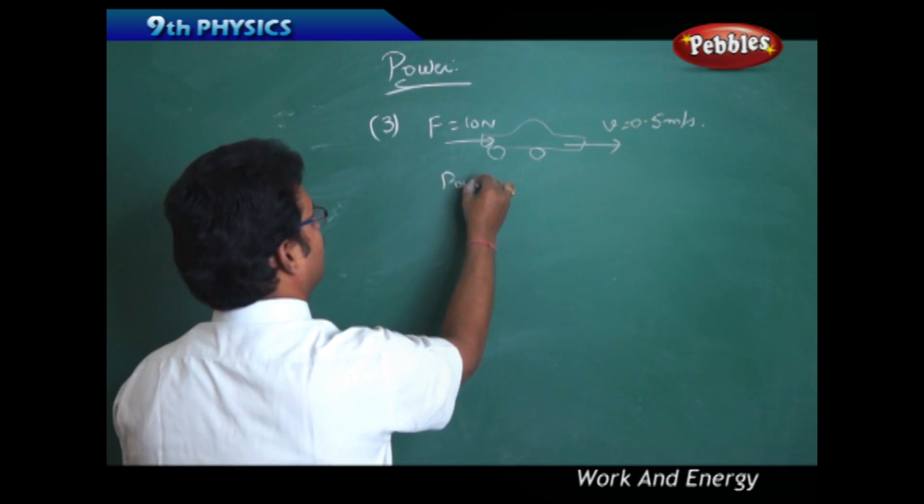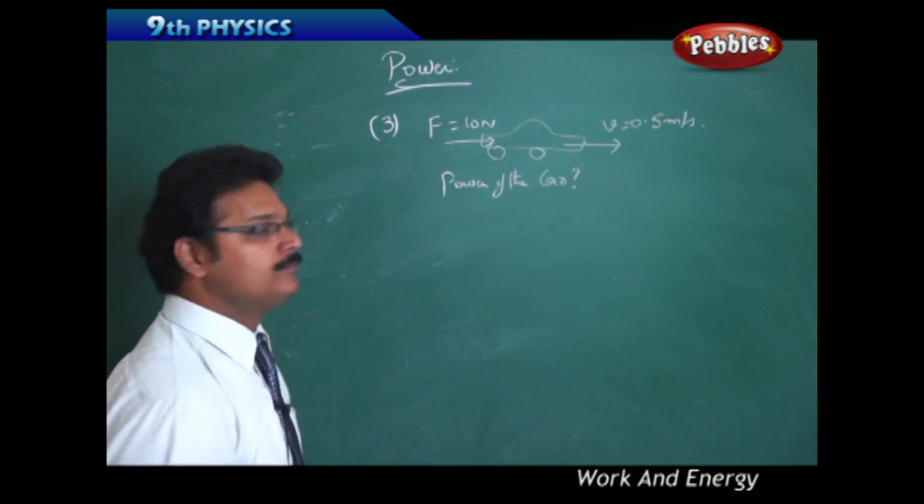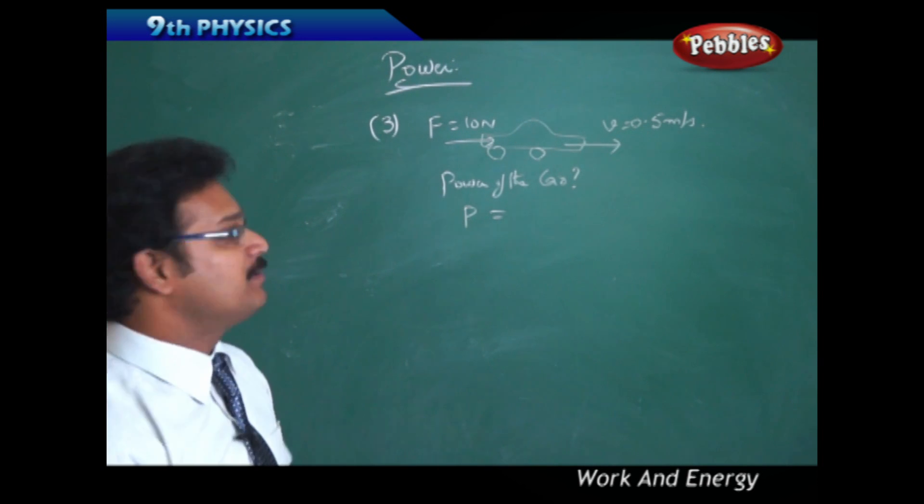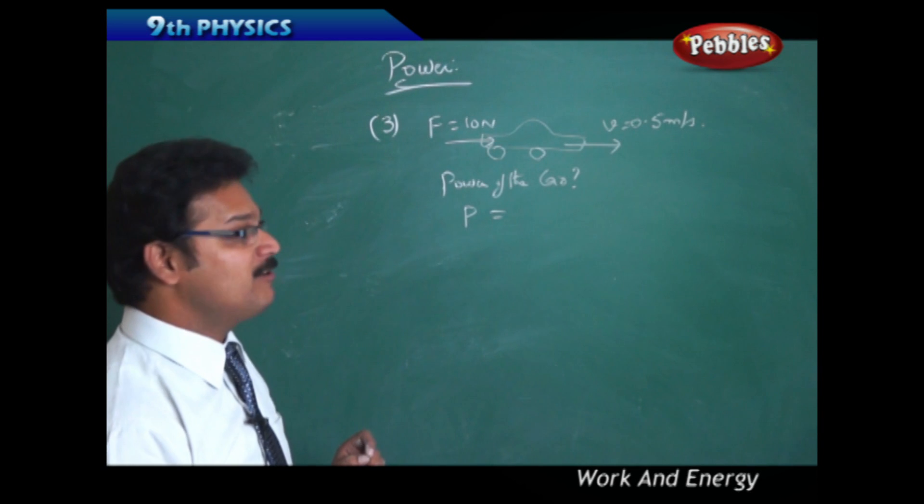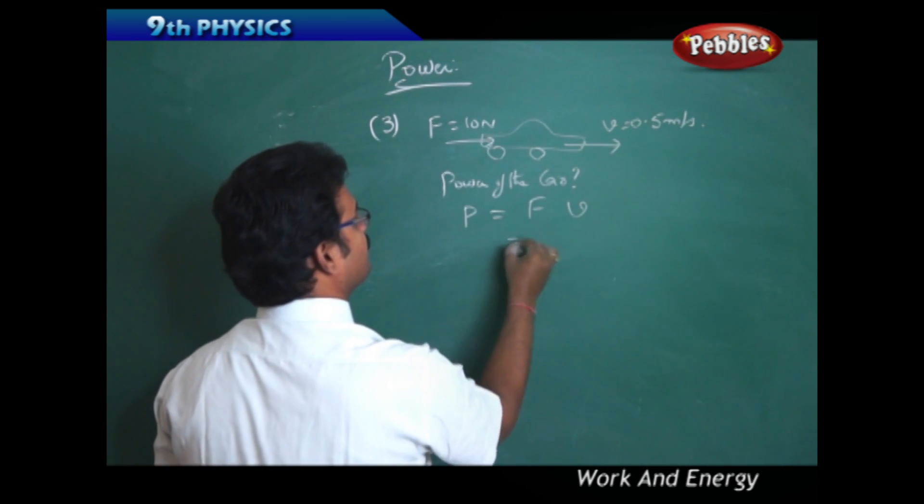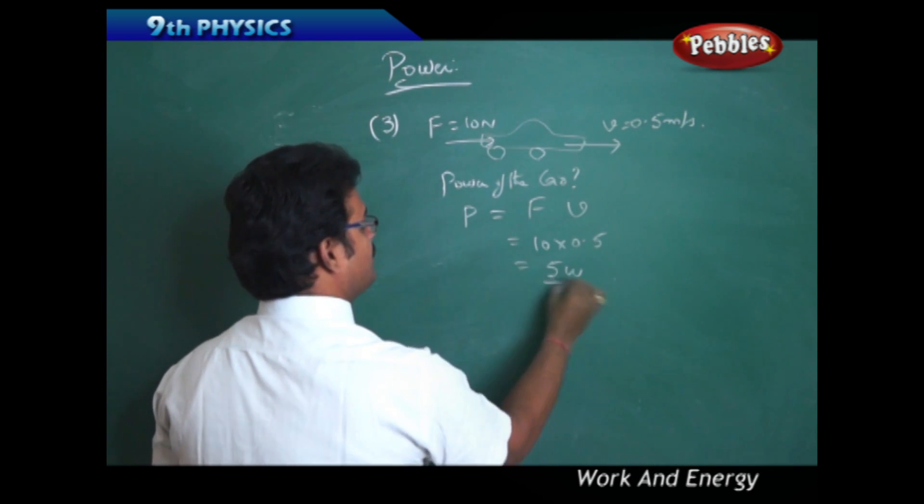We can't use P = W/T because work and time are not given. But we can use the other formula: power = force into velocity. P = F × v = 10 × 0.5 = 5 watts.